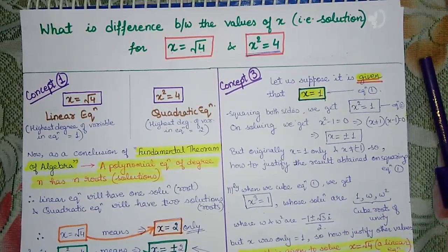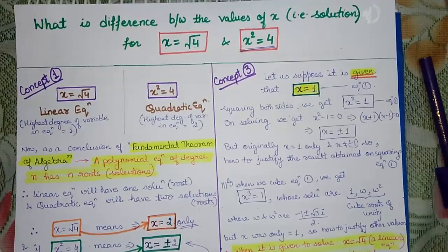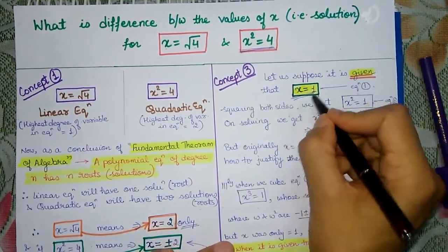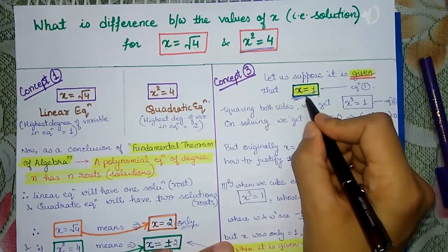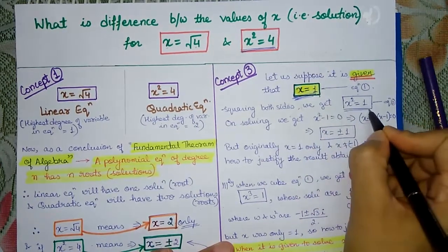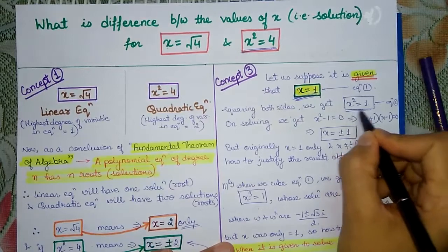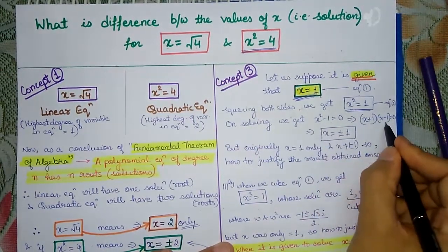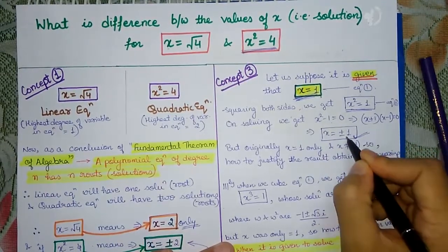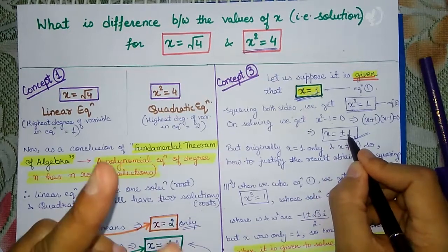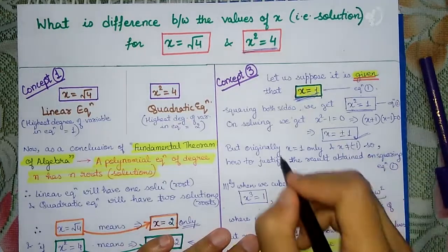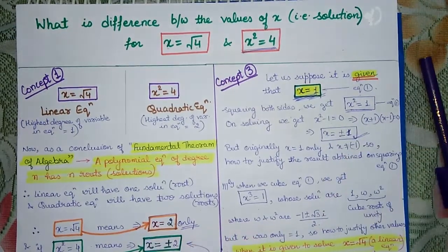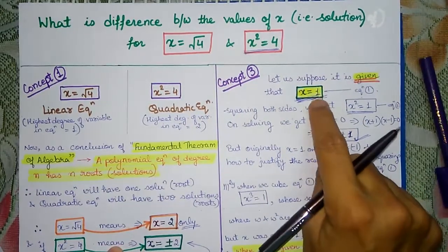Now I have one more proof to make this concept clearer. Suppose we are given x is equal to 1. If we square both sides, we get x squared is equal to 1. Now if you solve this quadratic equation — bringing everything to one side and using a squared minus b squared equals a plus b times a minus b — you get x equals plus 1 or minus 1. But originally we were given x equals 1. So how can we justify x equals minus 1? You cannot simply square a linear equation and create a quadratic equation.